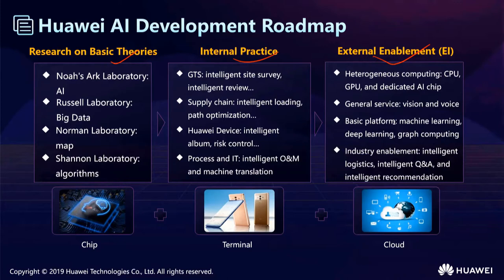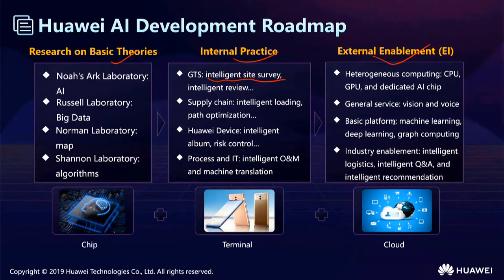After the basic theories research, the next step is internal practice. AI can be used in GTS, which is the managed and intelligent site service. AI can also be used in the supply chain and intelligent logistics, such as intelligent loading, warehouse operations, and intelligent warehouse management. If you use a Huawei smartphone, you know it uses AI technology — for example, intelligent errors, risk control, recommendations, and face detection. Even in IT operations, AI is used for intelligent operations and machine translation.